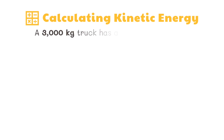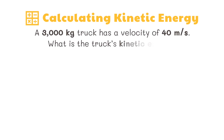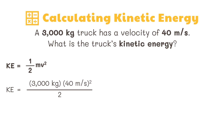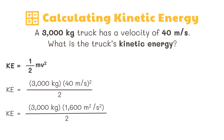Here is a sample problem. A 3,000 kilogram truck has a velocity of 40 meters per second. What is the truck's kinetic energy? The formula we use is: kinetic energy equals mass times velocity squared divided by 2. Using the formula, we get the square of 40 meters per second, which results in 1,600 meters squared per second squared.